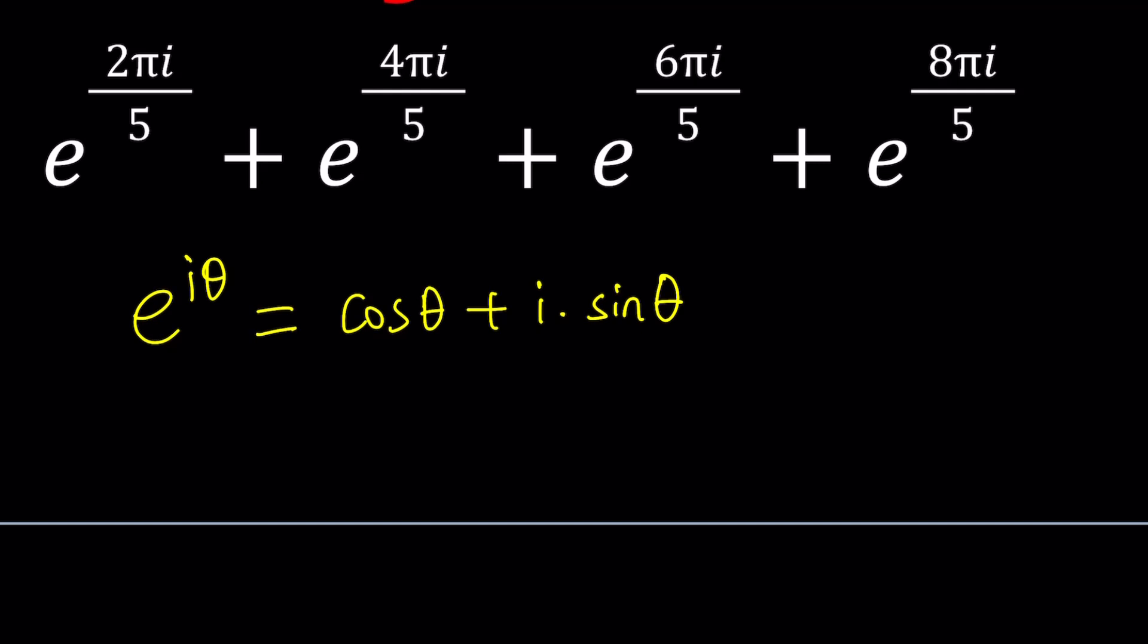Obviously, if you replace θ with π, you get a beautiful identity, which is known as, I think, Euler's identity. And there should be two Euler's identities, I believe. Anyways, there's a lot going on here.